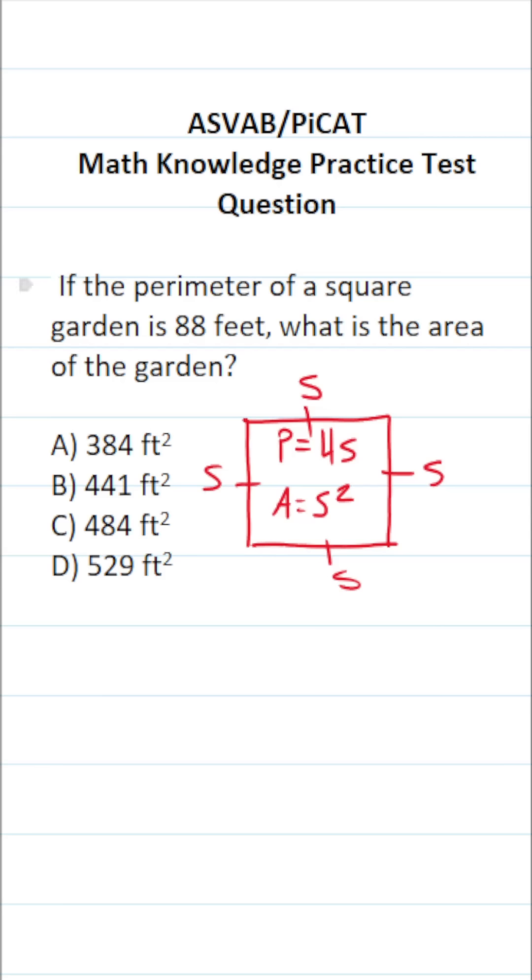We're told the perimeter of the square garden is 88 feet. So let's work with the perimeter formula. The perimeter of a square is 4 times its side length S. In this case, we're told P is 88, so let's plug in 88 for P.